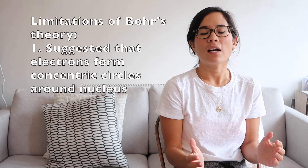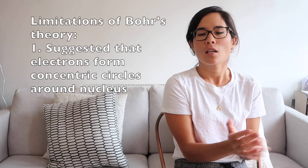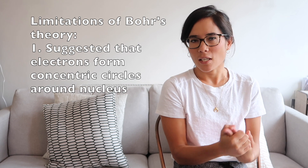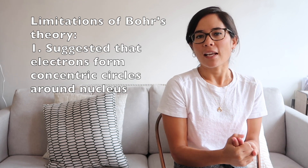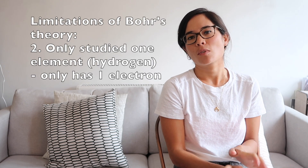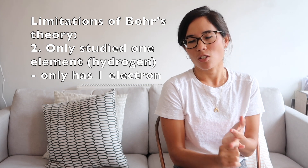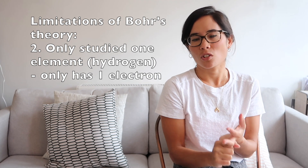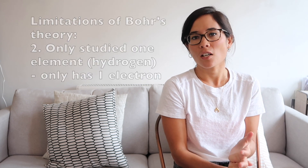However, there are several limitations with his model. Firstly, he decided that electrons existed in concentric circles around the nucleus — this isn't actually perfectly accurate and we'll go into why slightly later on in this video. He also only studied one element, hydrogen, so he was very limited with what he could suggest based on just the one electron which surrounds hydrogen.